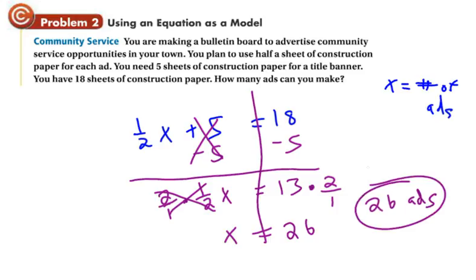And let's think about this. See if it makes sense. It says you can have half a sheet for each ad. So if you have a half a sheet for each ad and there's 26 ads, that would make 13 sheets of paper. You can make 26 ads. Plus the 5 for the title banner makes 18 total. And that's what we have. So our equation works out. So that's using an equation as a model for this situation.